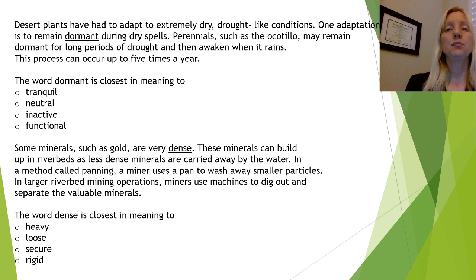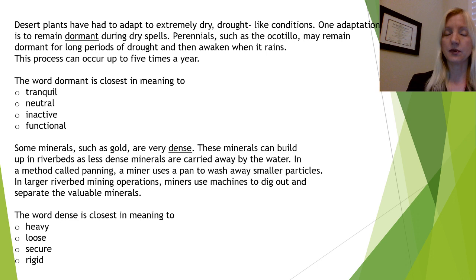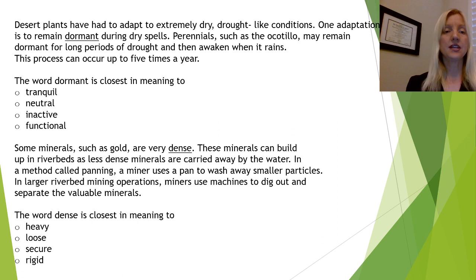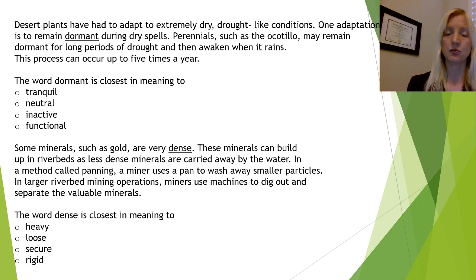These plants remain dormant during dry spells. The next sentence says they may remain dormant for long periods of drought and awaken when it rains. So that must mean they are not active, because they awaken only when it rains. Dormant must mean the third answer, inactive. For the next one, some minerals such as gold are very dense — these minerals can build up in riverbeds, while less dense material is carried away by water. If something can be carried away by water and another can't, the material that stays must be heavier. Dense, in this context, means heavy — the first answer is correct.